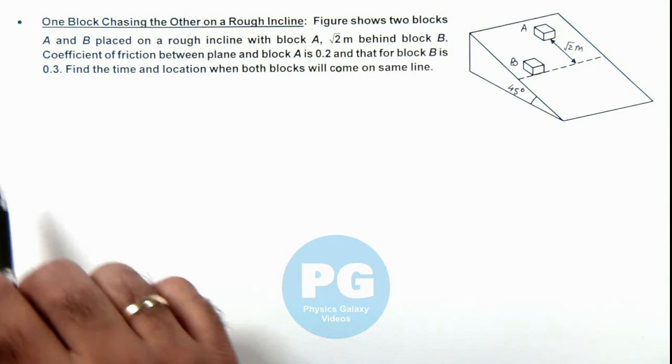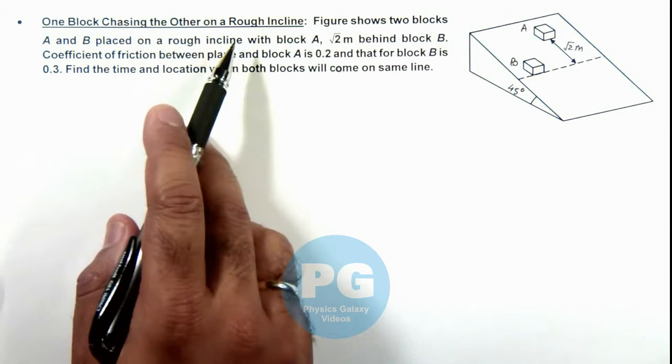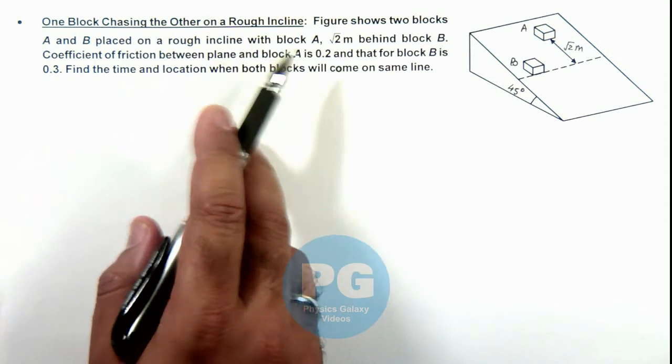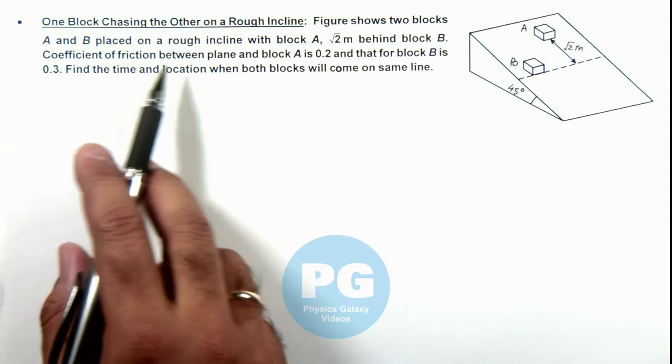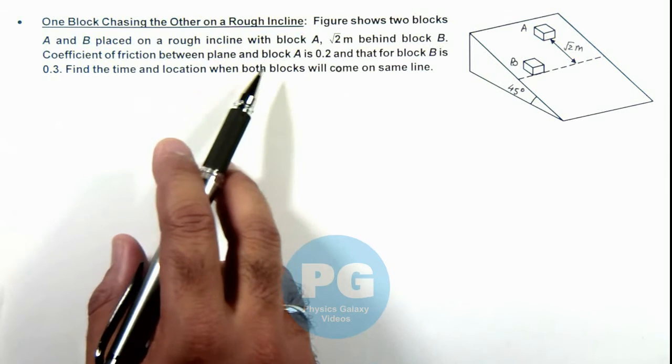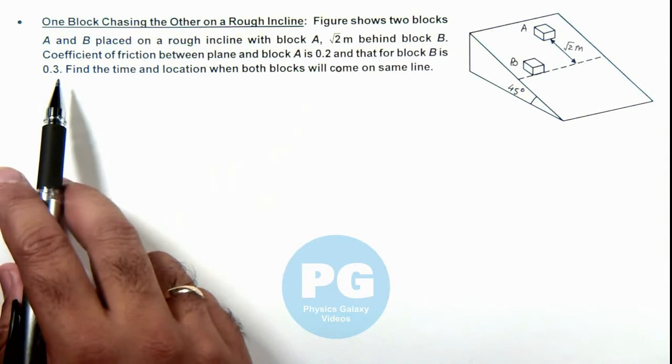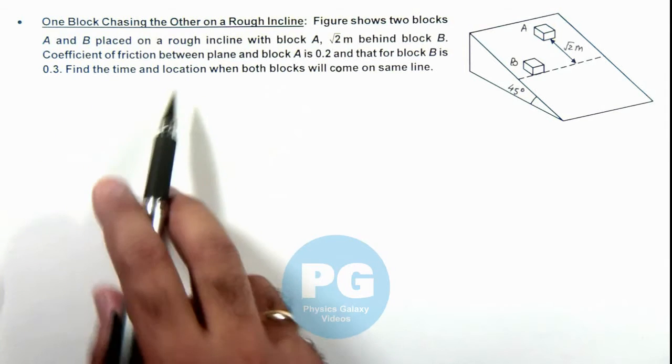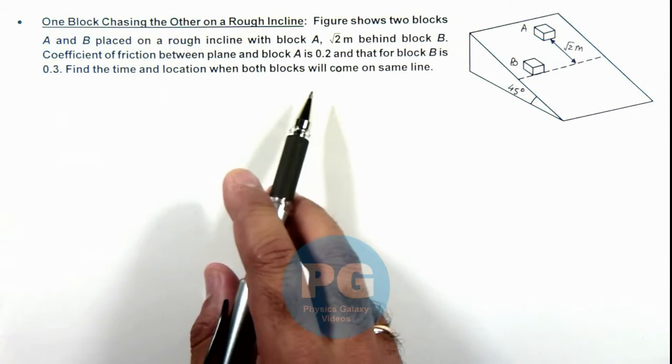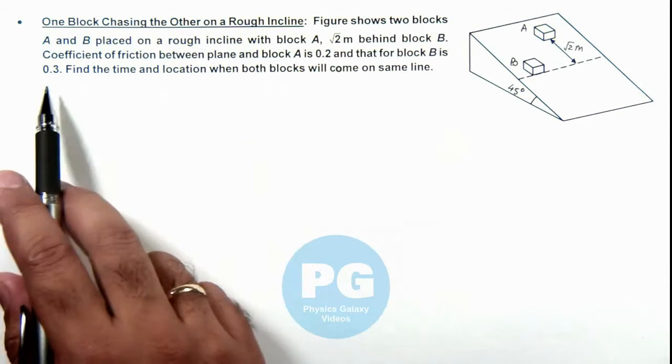This illustration is about one block chasing the other on a rough incline. The figure shows two blocks A and B placed on a rough incline with block A, given that it is √2 meter behind block B. The coefficient of friction between plane and block A is 0.2 and that for block B is 0.3.